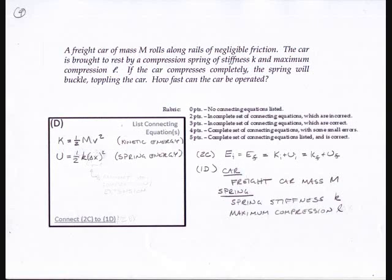You want to connect what you have in part 2c to the things you know in part 1d and to the variable in 2b that you're solving for. Kinetic energy has the same form as always: K = ½mv². The potential energy for a spring is U = ½k(Δx)², the spring stiffness times the square of the compression. Put down the connecting equations that you actually use in the solution, and as long as they're correct and used, you'll be perfectly fine.